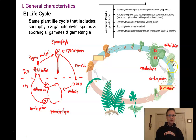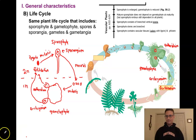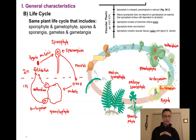Sperm cells swim down the neck of the archegonium and fertilize the egg. The product of fertilization is the zygote, which is still within the archegonium. The zygote divides by mitosis to start producing a sporophyte. Initially the sporophyte is really small — it's an embryo sporophyte — and our embryo sporophyte is still growing out of our gametophyte, just as it is in every single plant in the plant kingdom.